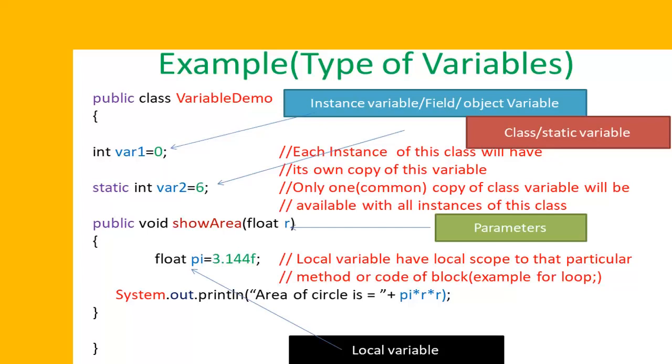The second type of variables are known as static variables, as they are also declared with the static keyword. Only one copy of a class variable or static variable will be available with all the instances of this class. That will be a common copy, so this variable will be shared among all the instances of this class.